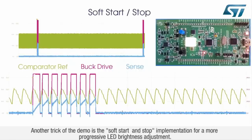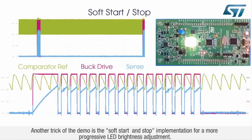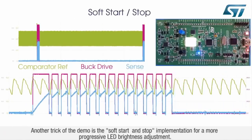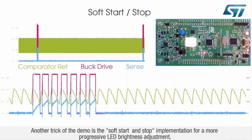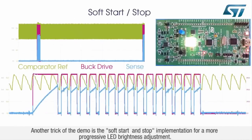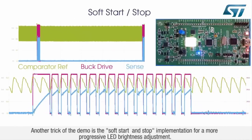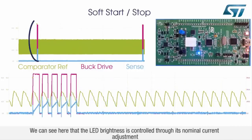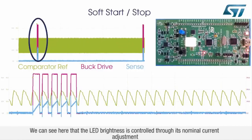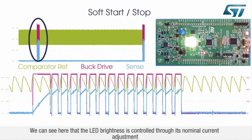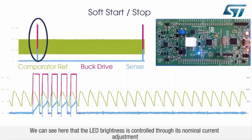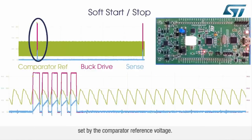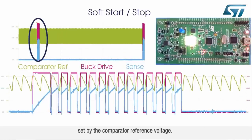Another feature of the demo is the soft start and stop implementation for more progressive LED brightness adjustment. The LED brightness is controlled through its nominal current adjustment set by the comparator reference voltage.